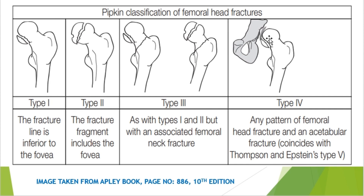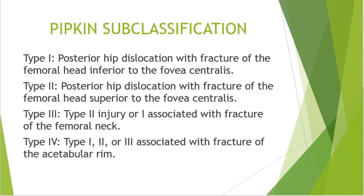In type 4, any pattern of femoral head fracture that is associated with an acetabular rim fracture is classified as type 4. Here in the pelvic area, this is our acetabulum — any fracture in the acetabular rim along with a femoral head fracture is called type 4.